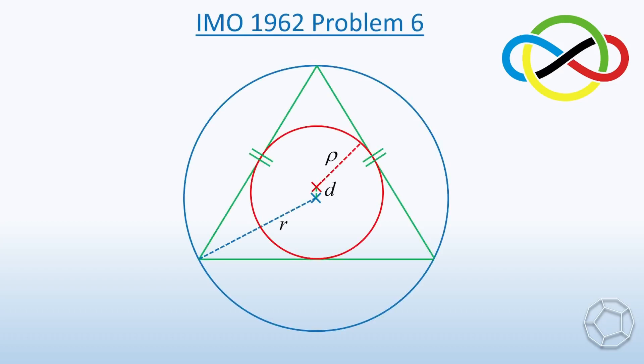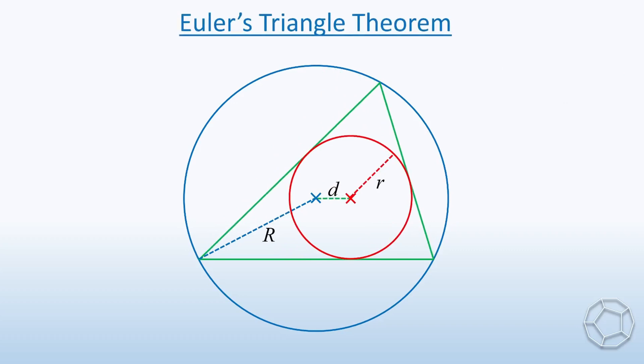In 1962, this IMO problem is a special case of the more general Euler's Triangle Theorem. So what is the theorem about?